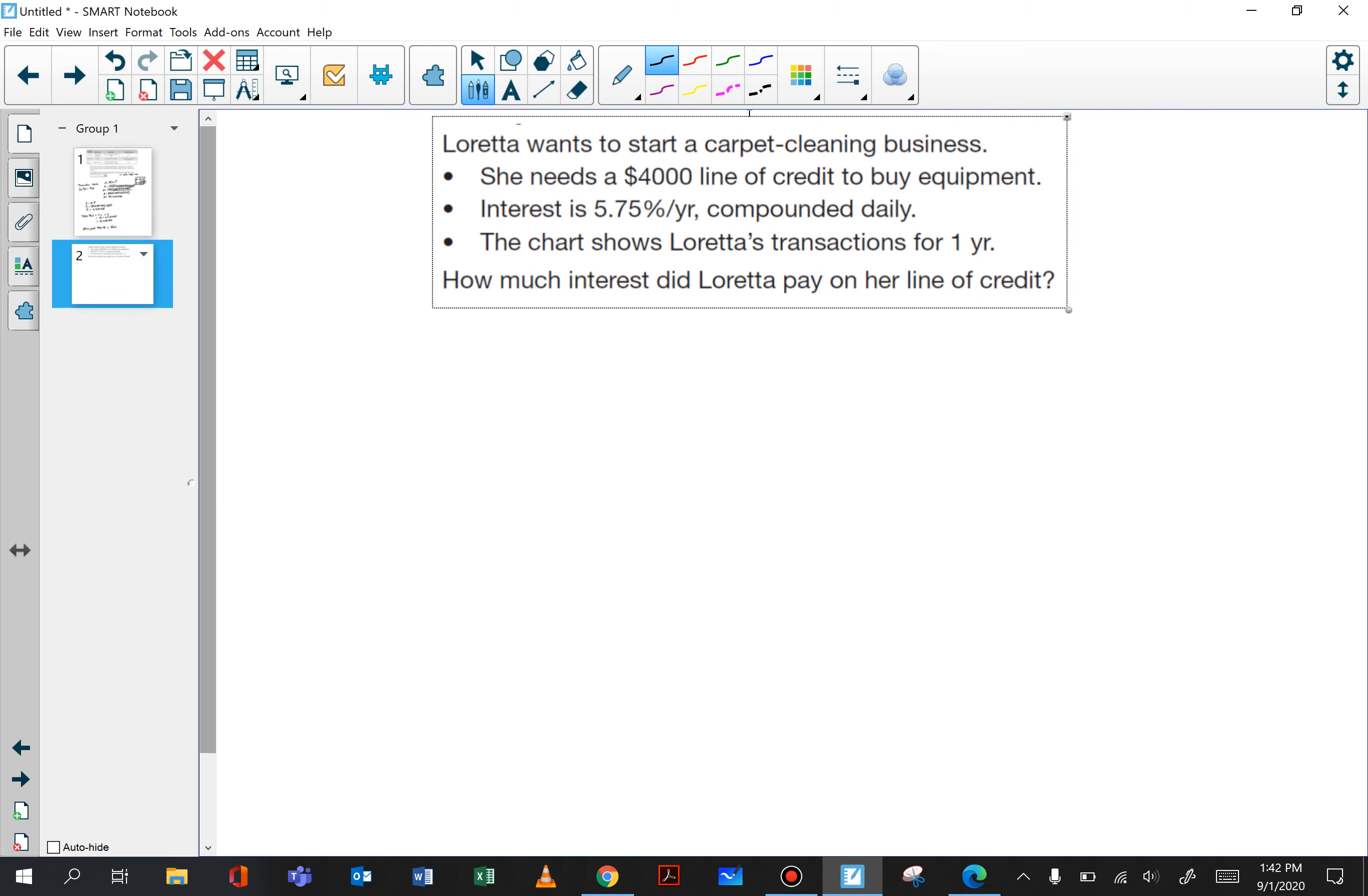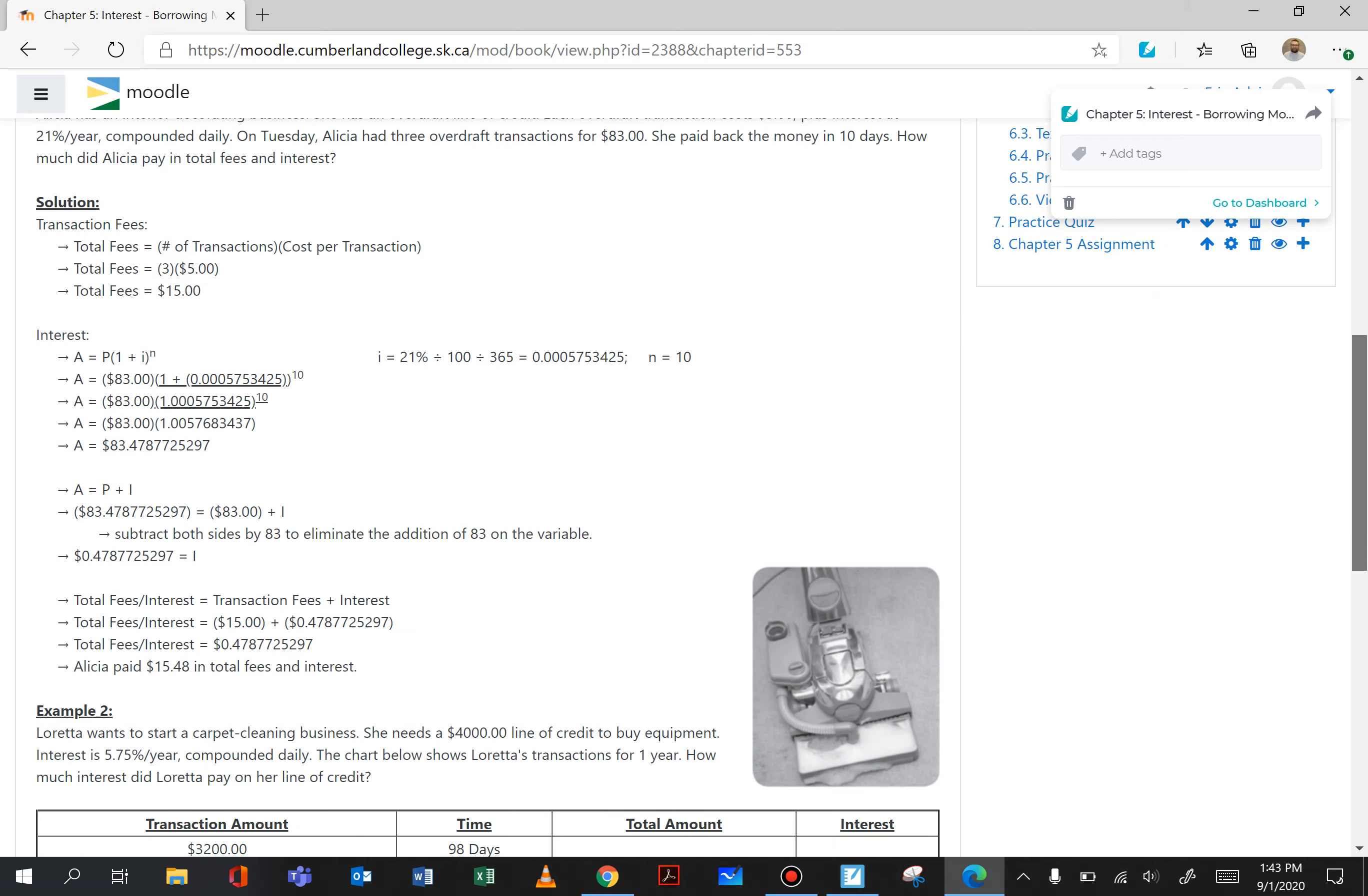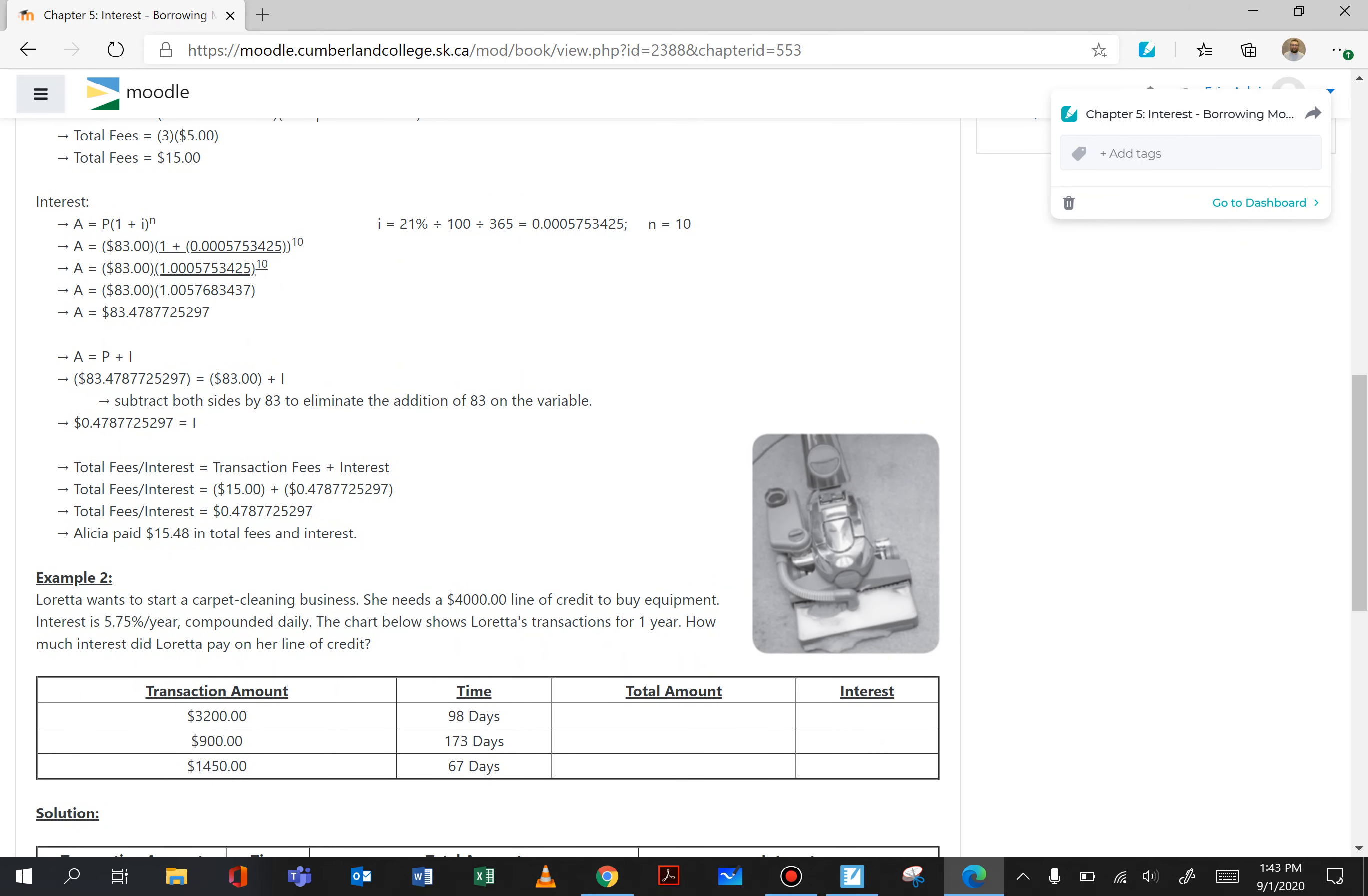Next example: Loretta wants to start a carpet cleaning business. She needs a $4,000 line of credit to buy equipment. Interest is 5.75% per year compounded daily. The chart shows Loretta's transactions for one year. We're just going to look at the chart here in Moodle. So the first transaction was $3,200 then $900 and then $1,450.